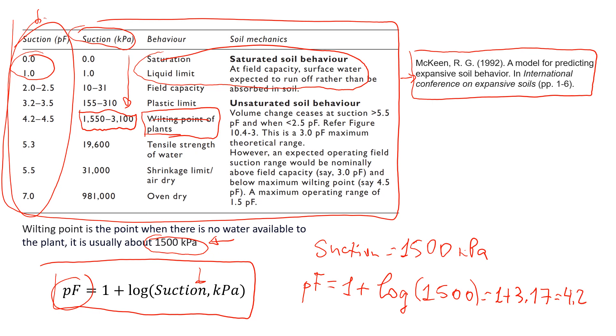That will be 1 plus 3.17, so it will be about 4.2. And this is what you see here in this table. You see a 4.2 value here. We get it from here. That's how you estimate this value of pF.